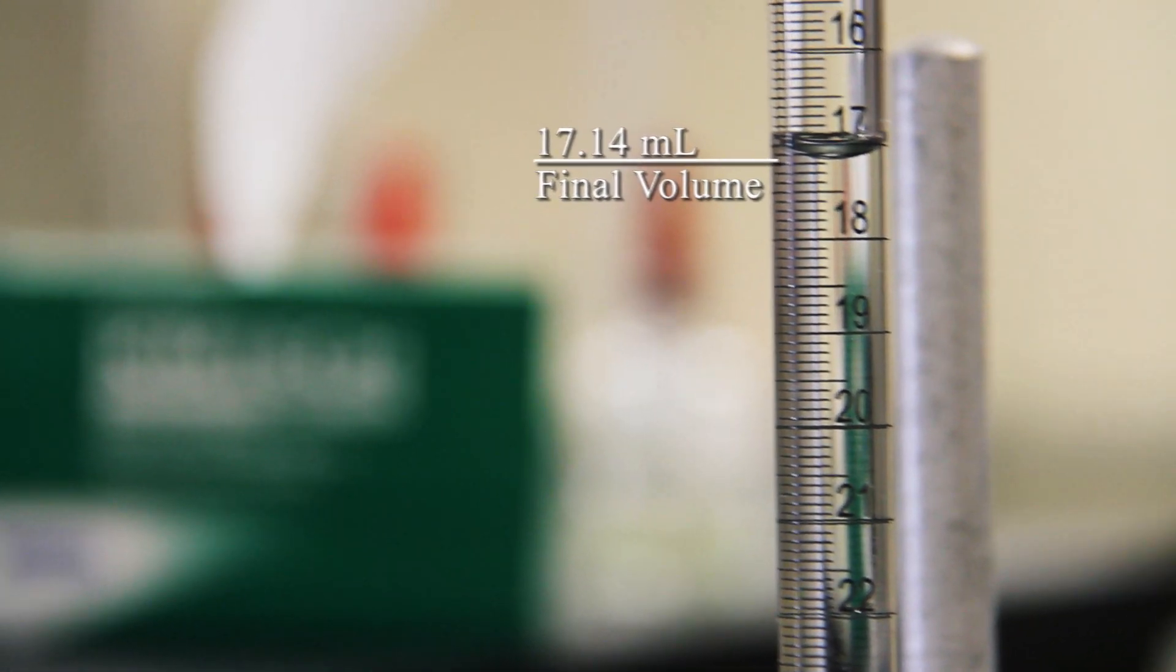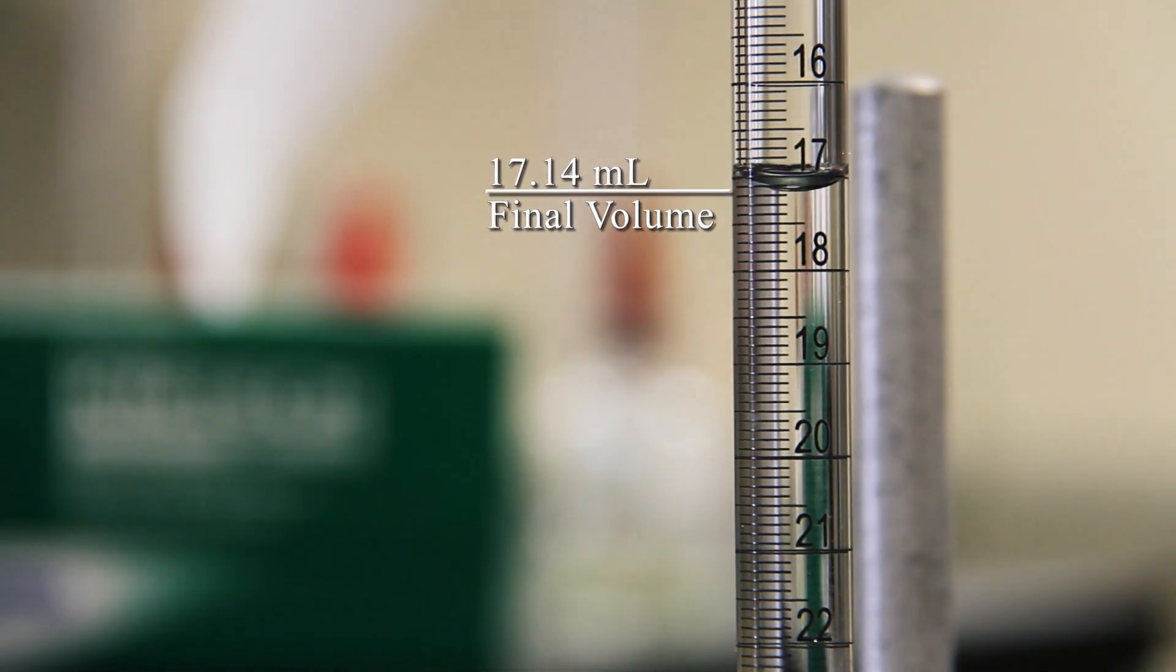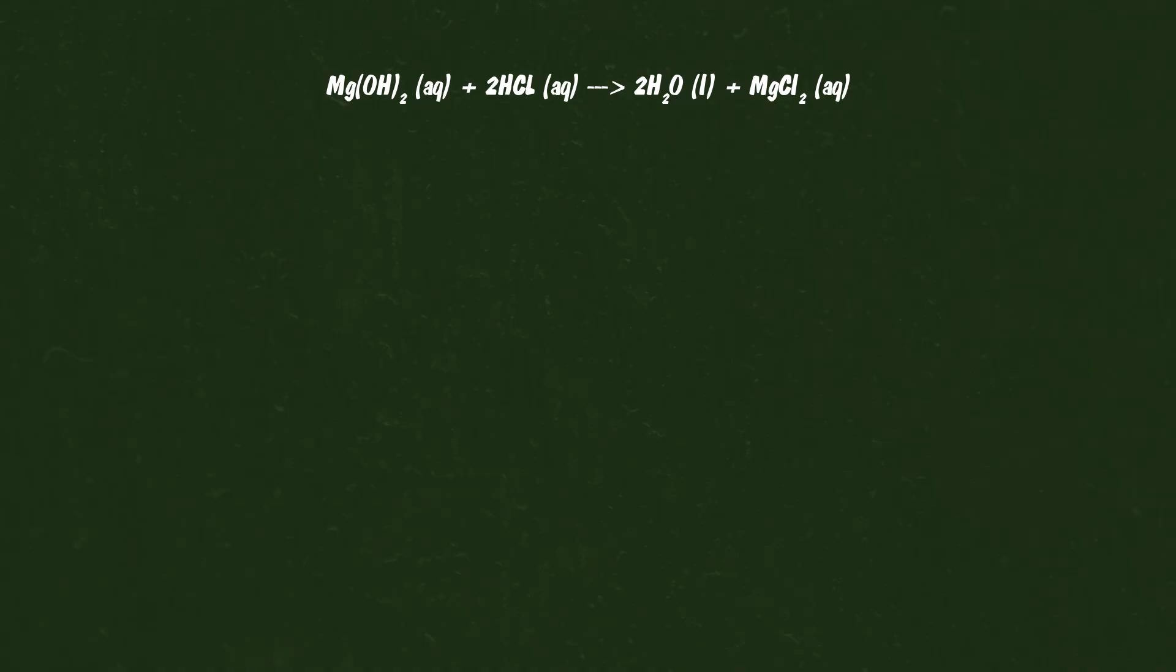Now we'll record the final volume in the burette to see how much acid we added to completely react with the base. If we ended the titration with a volume reading 17.14 milliliters, and started with a volume reading 7, we've dispensed a total of 10.14 milliliters of 0.6764 molar hydrochloric acid.